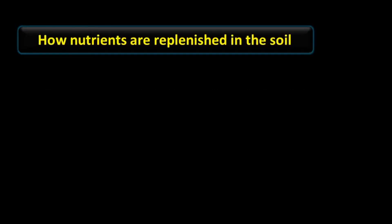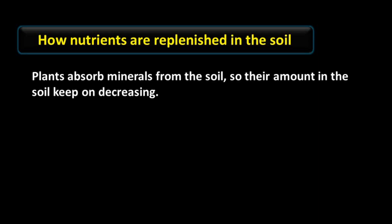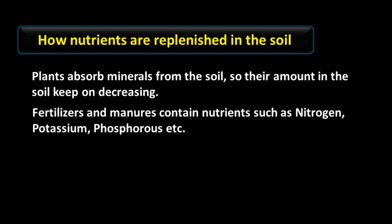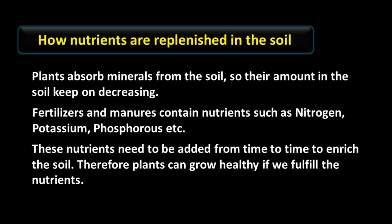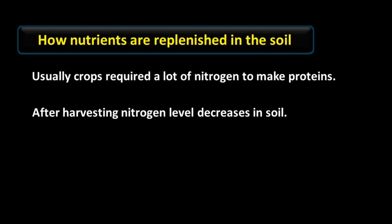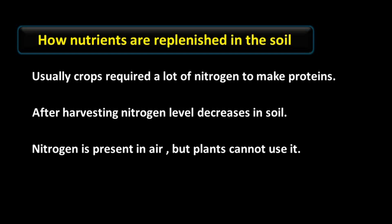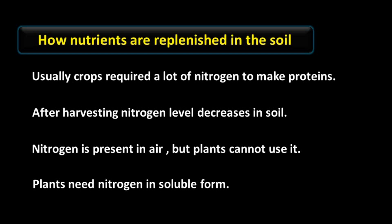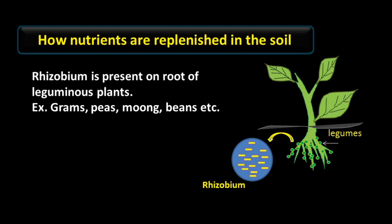How are nutrients replenished in the soil? Plants absorb minerals from the soil, so their amount keeps decreasing. Fertilizers and manures contain nutrients such as nitrogen, potassium, and phosphorus, which need to be added from time to time to enrich the soil so that plants can grow healthy. Crops require a lot of nitrogen to make proteins. After harvesting, the nitrogen level decreases in the soil. Nitrogen is present in air, but plants cannot use it directly — plants need nitrogen in soluble form.